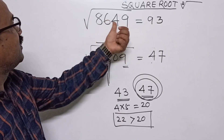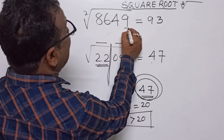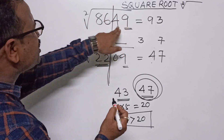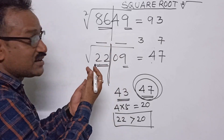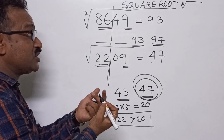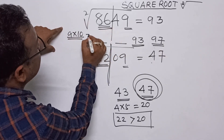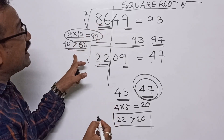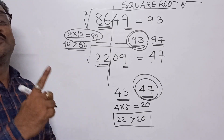Now back to 8649. Last digit 9 means 3 or 7 will come. Pairing gives 86 and 49. For 86: 9²=81, 10²=100 — so 9. Possible answers are 93 or 97. Now 9 into 10 equals 90. Since 86 is less than 90, the smaller number is correct. So √8649 = 93.